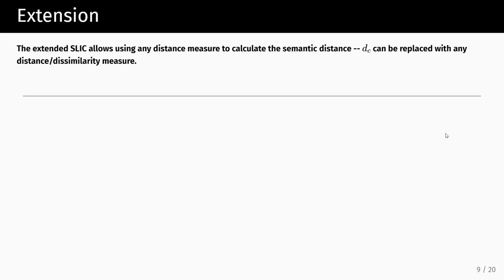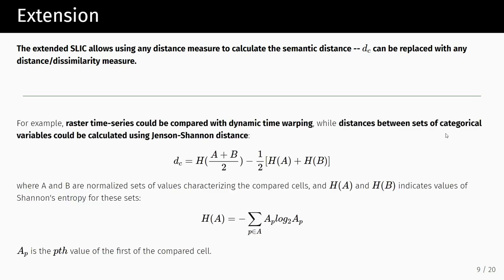Our extension is very simple. The main idea is that we take the color distance part — the Euclidean distance — and replace it with whatever distance measure or dissimilarity measure you want to use, depending on your data. For example, if you work with categorical variables or frequencies, you can use Jensen-Shannon distance. If you have a time series, maybe you use dynamic time warping, or two-dimensional dynamic time warping for two-dimensional time series.